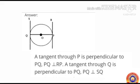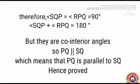Therefore, angle SQP equals angle RPQ equals 90 degrees. So angle SQP plus angle RPQ equals 180 degrees. But they are co-interior angles, so PQ is parallel to SQ.